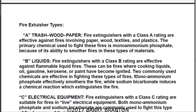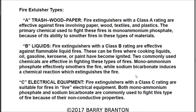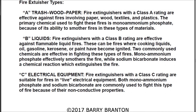We have a breakdown on the different types of fire extinguishers. Class A is for trash, wood, and paper. Fire extinguishers with a class A rating are effective against fires involving paper, wood, textiles, and plastics. The primary chemical used is monoammonium phosphate because of its ability to smother fires in these types of materials.